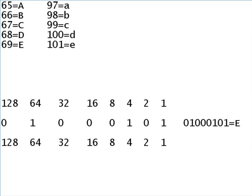Let's pick capital A, which has ASCII value 65. 128 goes into 65 zero times. 64 goes into 65 one time, with remainder 1.